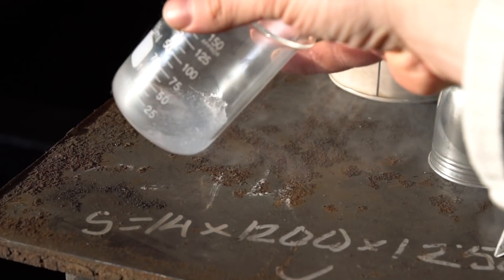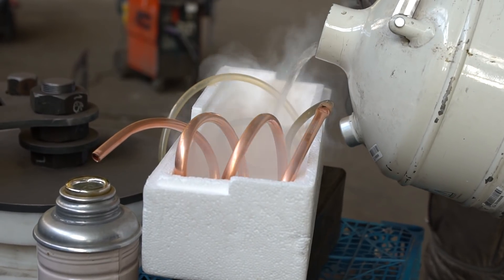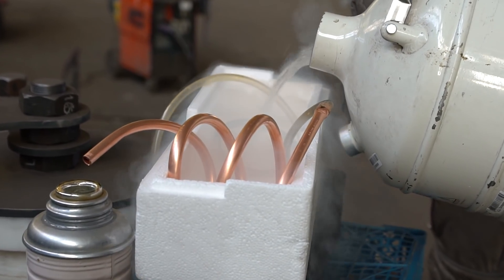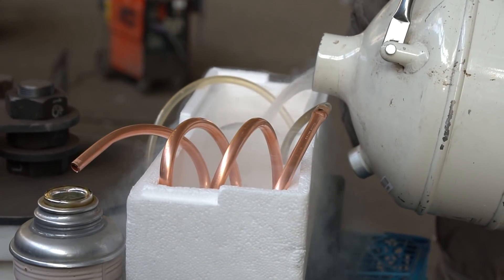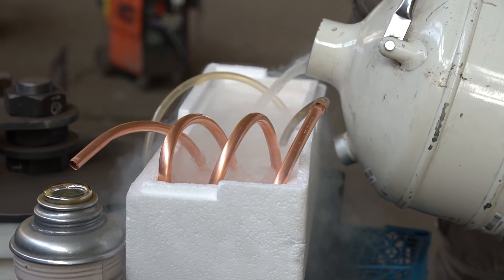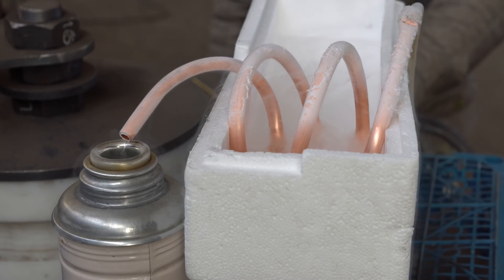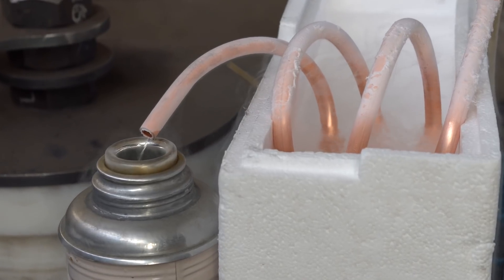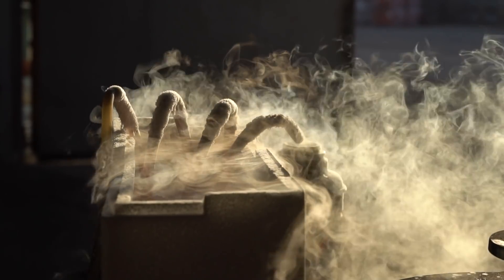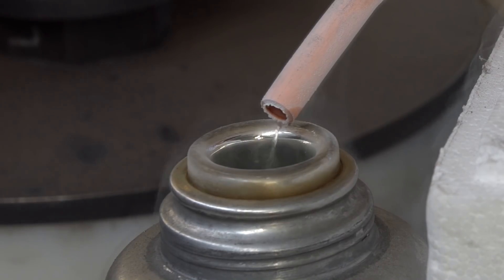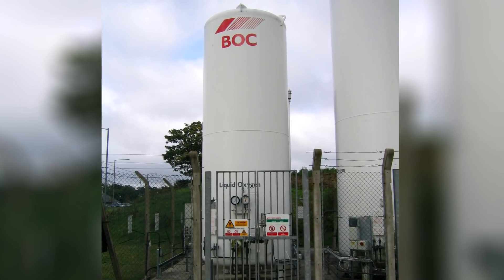Like any gas, oxygen can be condensed, i.e. liquefied. To condense liquid oxygen, we used liquid nitrogen. The boiling point of liquid nitrogen is 13 degrees lower than that of oxygen, so by passing pure oxygen from a cylinder through a copper coil cooled by liquid nitrogen, we can obtain liquid oxygen. Fun fact: in large hospitals, oxygen is normally stored in liquid form in large tanks to save space and for easy transportation.